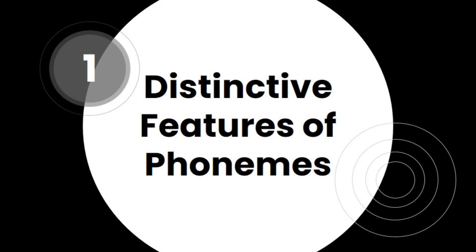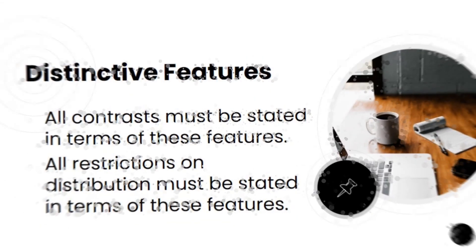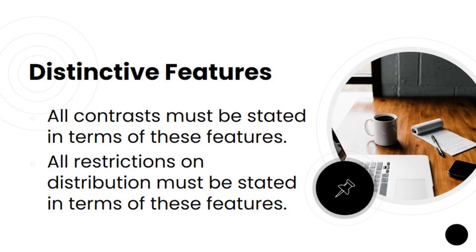Frumkin, Rodman and Hayams in 2014 wrote that when a feature distinguishes one phoneme from another, it is a distinctive feature, or equivalently a phonemic feature. Roman Jacobson proposed that there is one universal set of distinctive features for all languages which define classes of sounds relevant to phonology. All contrasts must be stated in terms of these features, and all restrictions on distribution must be stated in terms of these features.